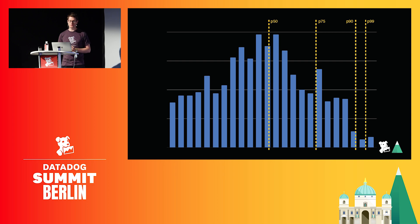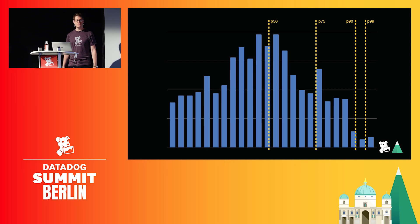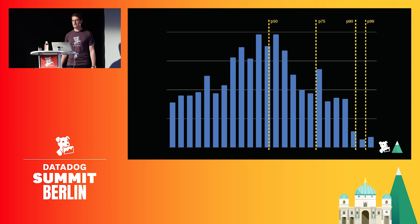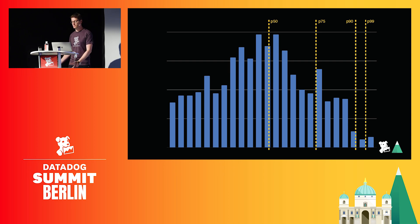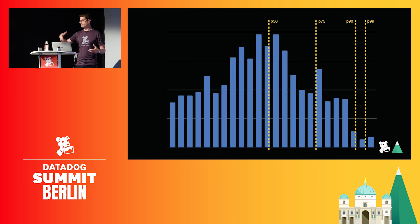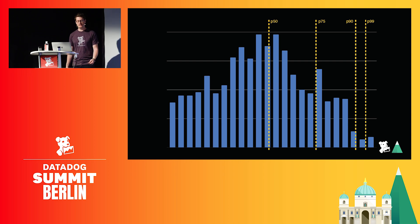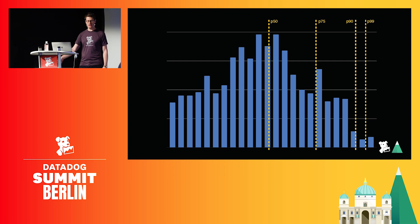The most significant feature of distributions is the ability to calculate global percentiles for any tag combination. This borrows from technology we built for the APM product, where latency percentiles are calculated for things like service or resource, but solves the issue for the generic case, giving you total freedom about what you measure and by what you measure it. Unlike other distribution, histogram, or timer implementations, there's no need to set boundaries on the expected dataset — there's no infinite value, which we know to be impossible in most cases. Our implementation of distributions allows you to send any data and aggregate accurately on the fly, no matter what.